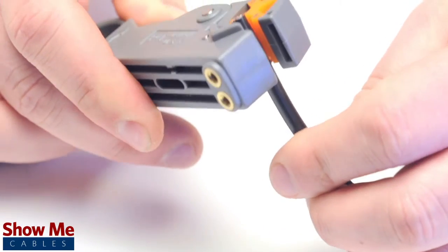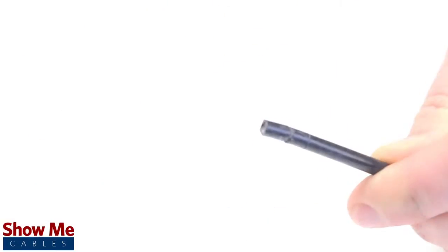Start by inserting the ferrule over the outer jacket of the cable. Then using your cable stripper, strip back the outer jacket and dielectric.